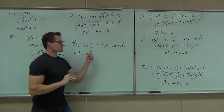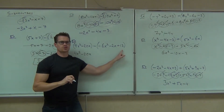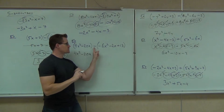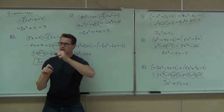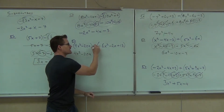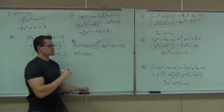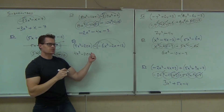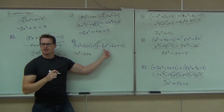Do any of the terms inside my second parenthesis change? Yes, in fact every single one of them. All this is going to do, since that's a negative 1, is essentially just change all the signs. Let's make sure we have this right — that's like a negative 1, and we'll distribute it to all three terms. What's our negative 1 times negative 6x squared?